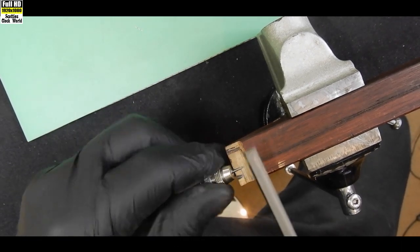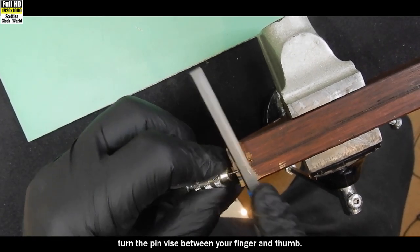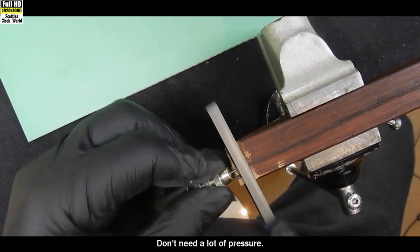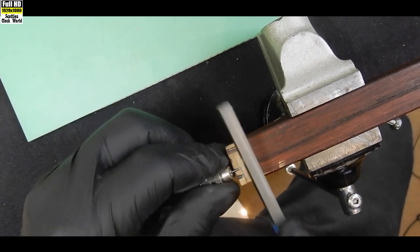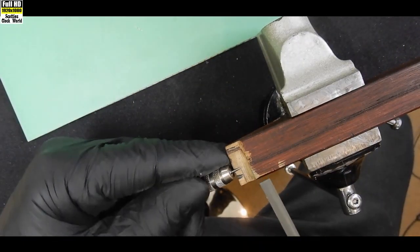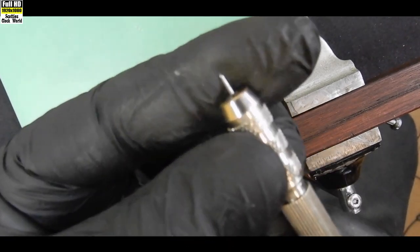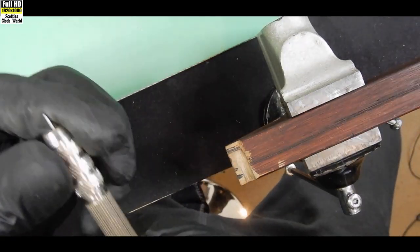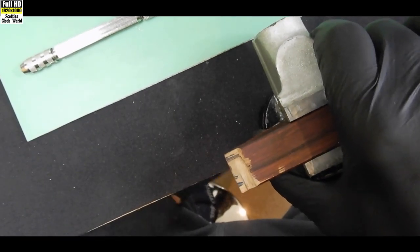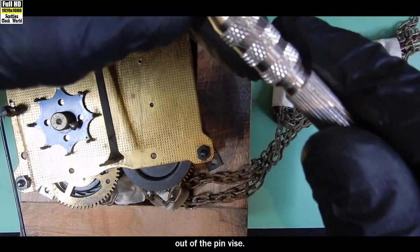Right, 45 degrees. Roll the file across. Turn the pin vise between your finger and thumb. Don't need a lot of pressure. Yeah, that's pretty much right I think. There we go. All right. So I'll get rid of this. Take our new tapered pin out of the pin vise.